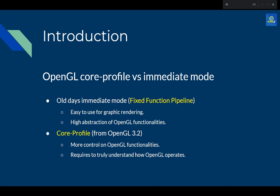It's also important to talk about profiles — the modes of operation of OpenGL. OpenGL has basically two profiles: the core profile, and the immediate mode also called the fixed function pipeline. The fixed function pipeline is the old way. The problem with it was that programmers didn't have a lot of access to OpenGL's functionalities, so rendering results weren't great and we didn't have much control.